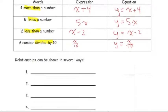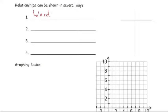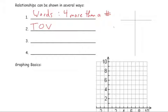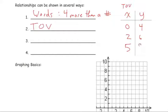We can show relationships in several ways: in words, a table of values (TOV), a graph, and an equation. Looking at the example '4 more than a number,' we can represent that with a table of values. If x is our input number, the matching y is 4 more than that. So if we choose 0, y is 4; if we choose 2, y is 6; if we choose 5, y is 9. We call x our input and y our output.